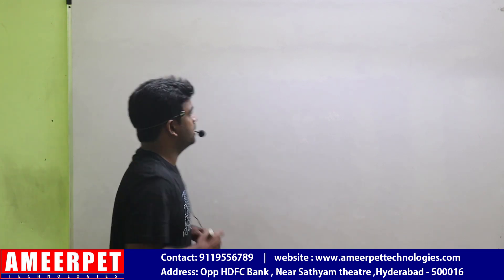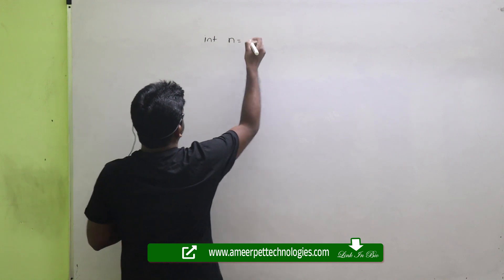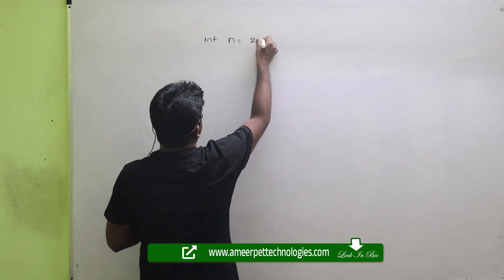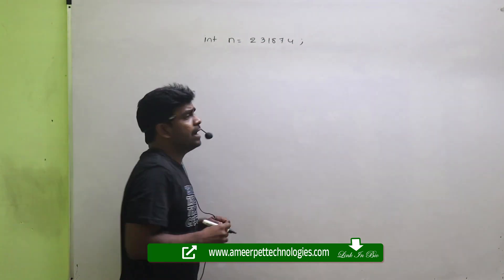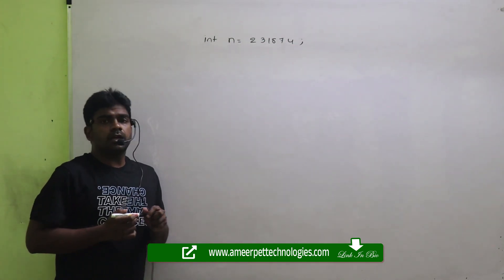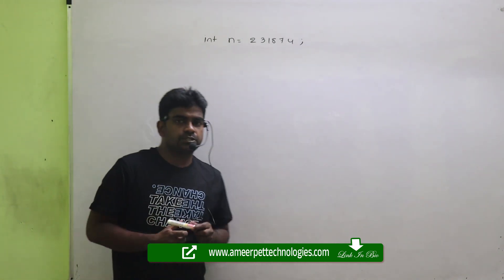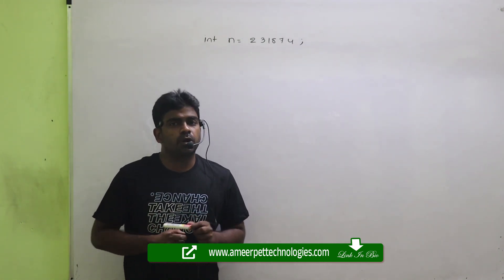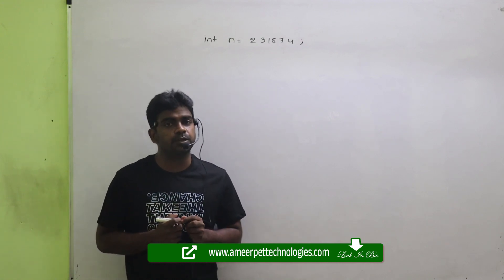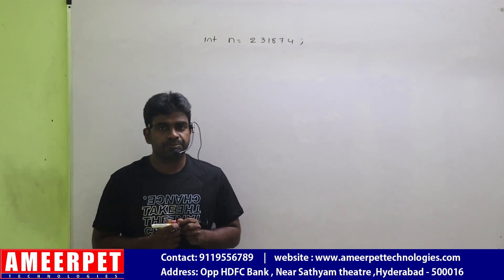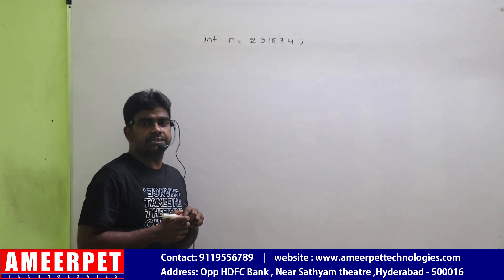I am just taking one number: integer n equals to 231874. If you want to read using the Scanner class for Java students, or Console.ReadLine if you are a .NET student, you can read the input from the user. But after reading that, how can you find out the smallest digit?